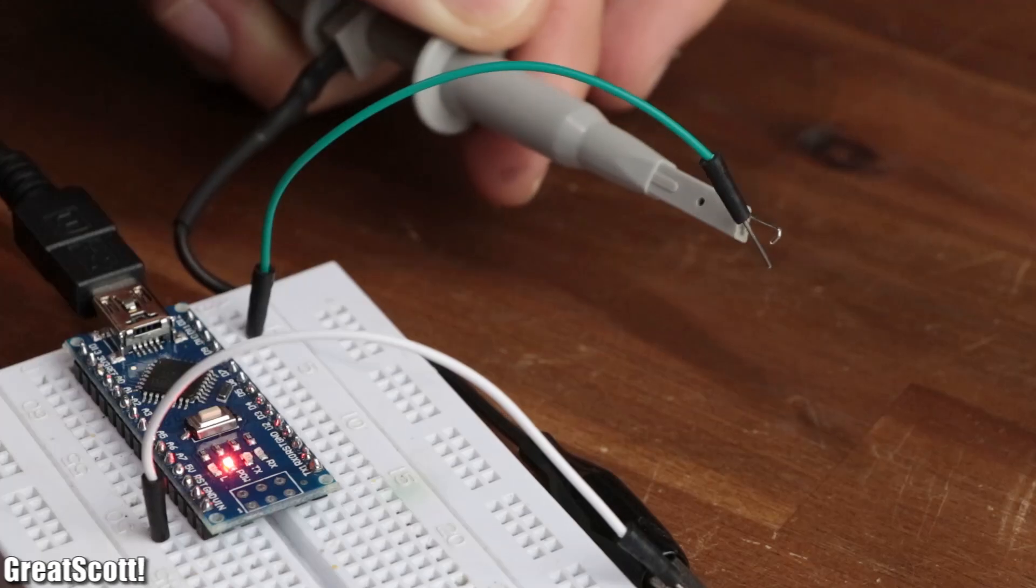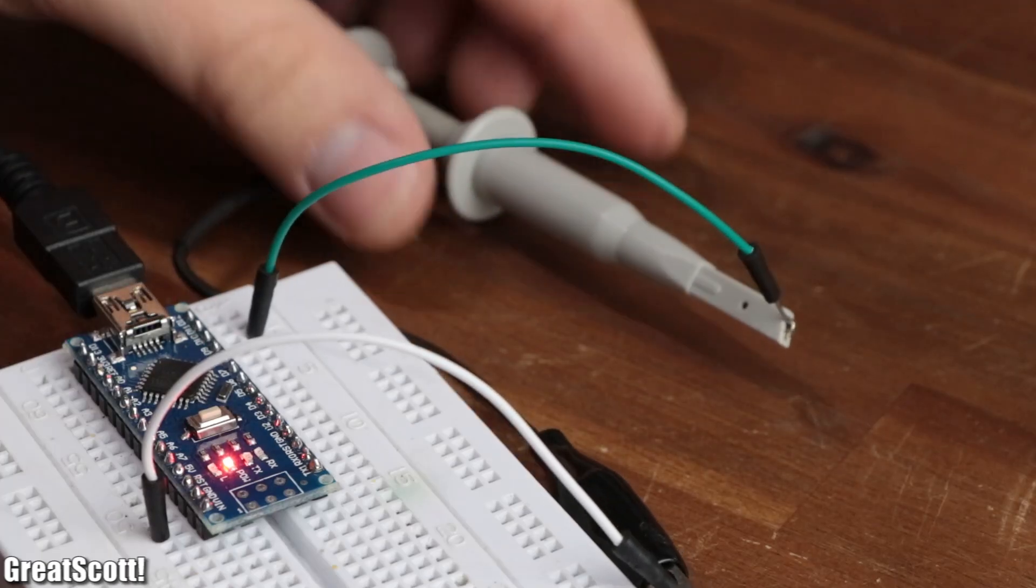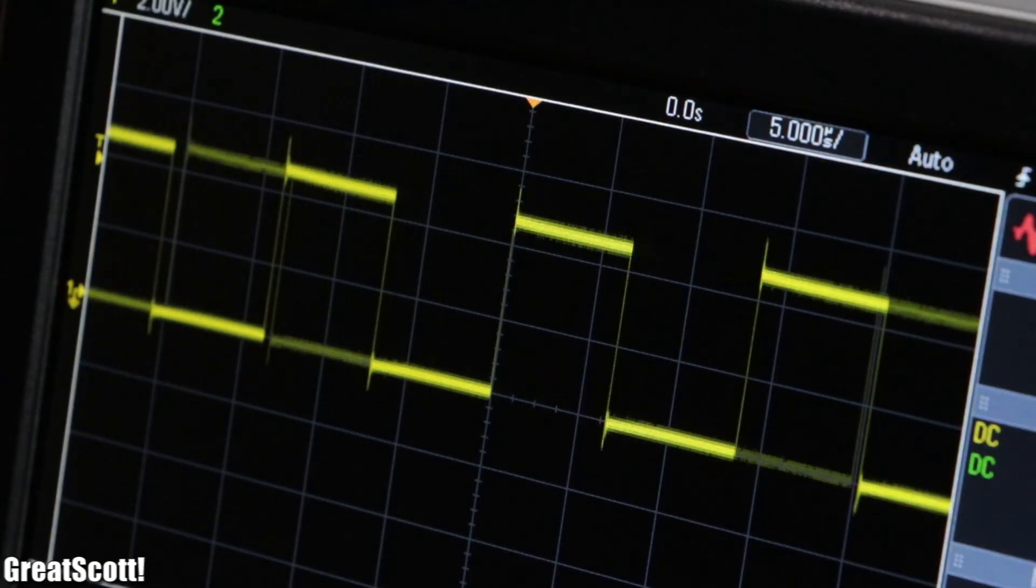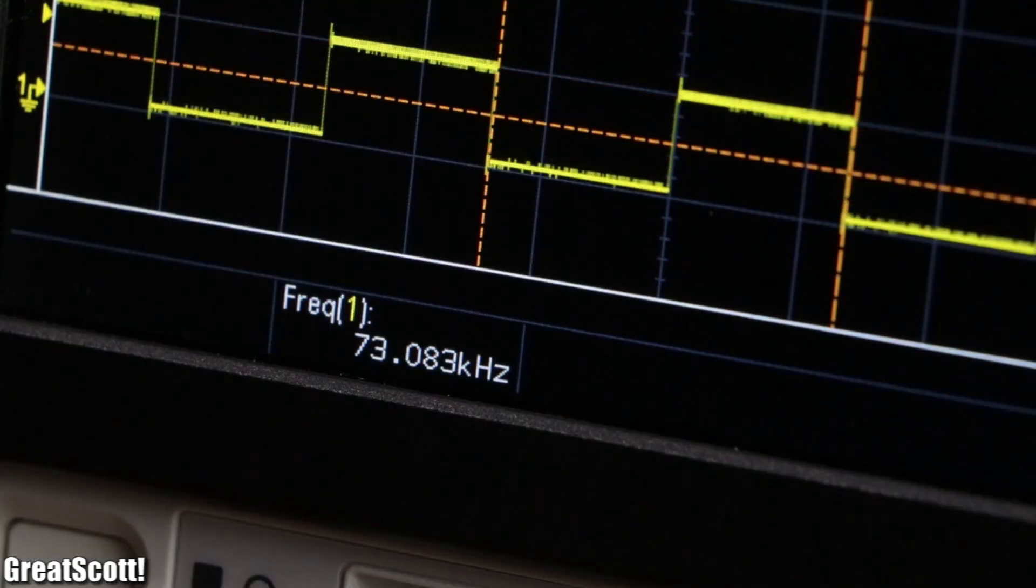After uploading it, we can connect the pin to the oscilloscope to observe that it turns on and off with a frequency of 73 kilohertz.